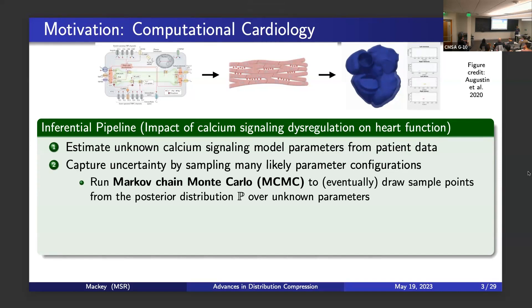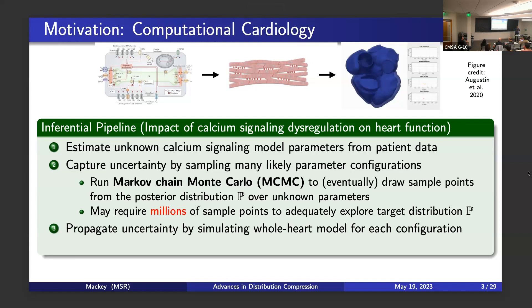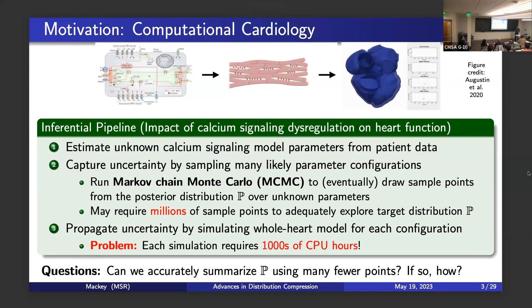You typically sample millions of points because it's a complex posterior — you need the Markov chain to mix to that posterior distribution. That gives uncertainty about single-cell calcium signaling parameters, but what you actually care about is the heart. For each of those sample points, you want to simulate a heart, and that's where things get expensive. Each heart simulation costs thousands of CPU hours. With millions of points and thousands of CPU hours each, that's too many. Can we accurately summarize the distribution using far fewer points — maybe a thousand instead of a million?